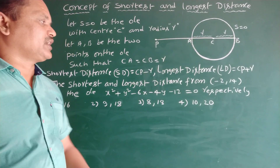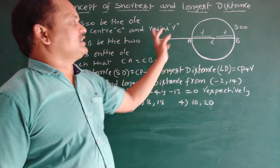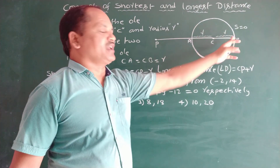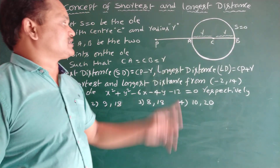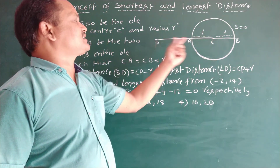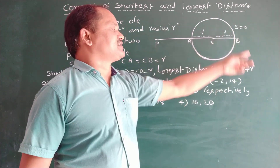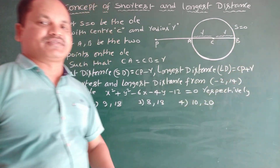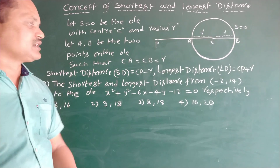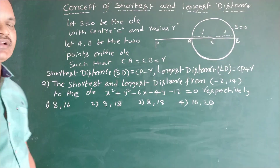The longest distance LD is PB, the distance between P and B. PB equals CP plus CB, and CB equals R, so the longest distance is CP plus R. Therefore, the shortest distance is CP minus R and the longest distance is CP plus R.